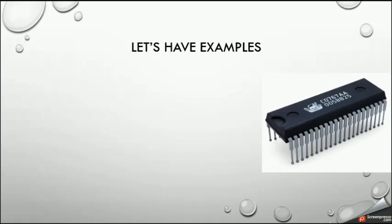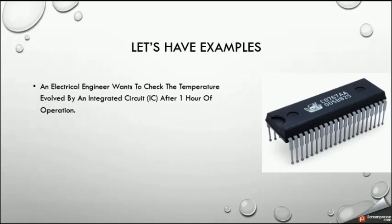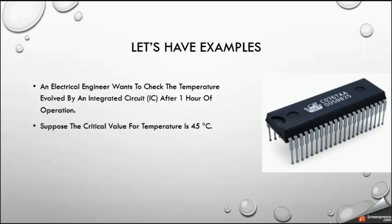Here is another example: the integrated circuit, found in many electrical devices especially in electronics. One important issue in ICs is the temperature during operation. This is one of the most critical problems. We must maintain the temperature below some critical value. Suppose that according to the manufacturing and design of this IC, the critical temperature is 45 degrees centigrade after one hour of operation.